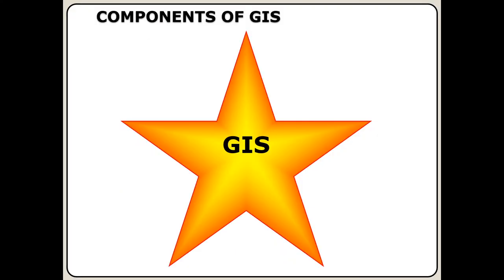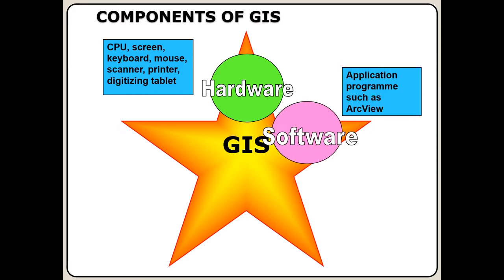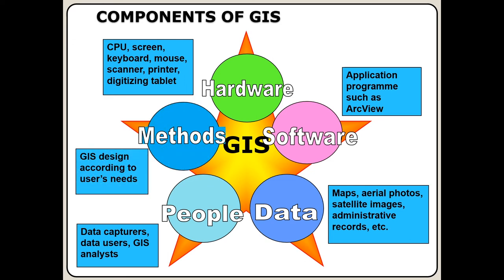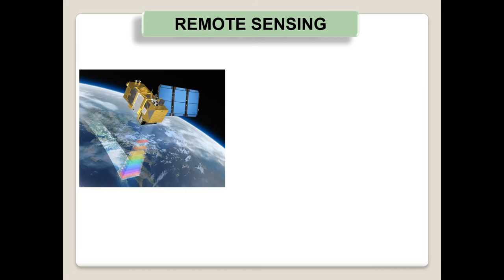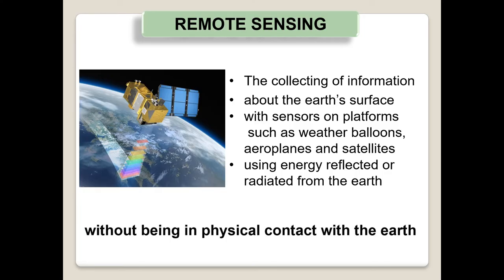A GIS consists of various components: hardware such as your computer screen, software — your programs, data — your maps, people and methods. Remote sensing is another term you have to know. It is the collecting of information about the Earth's surface with sensors on platforms, where you are not in physical contact with the Earth while gathering the information.